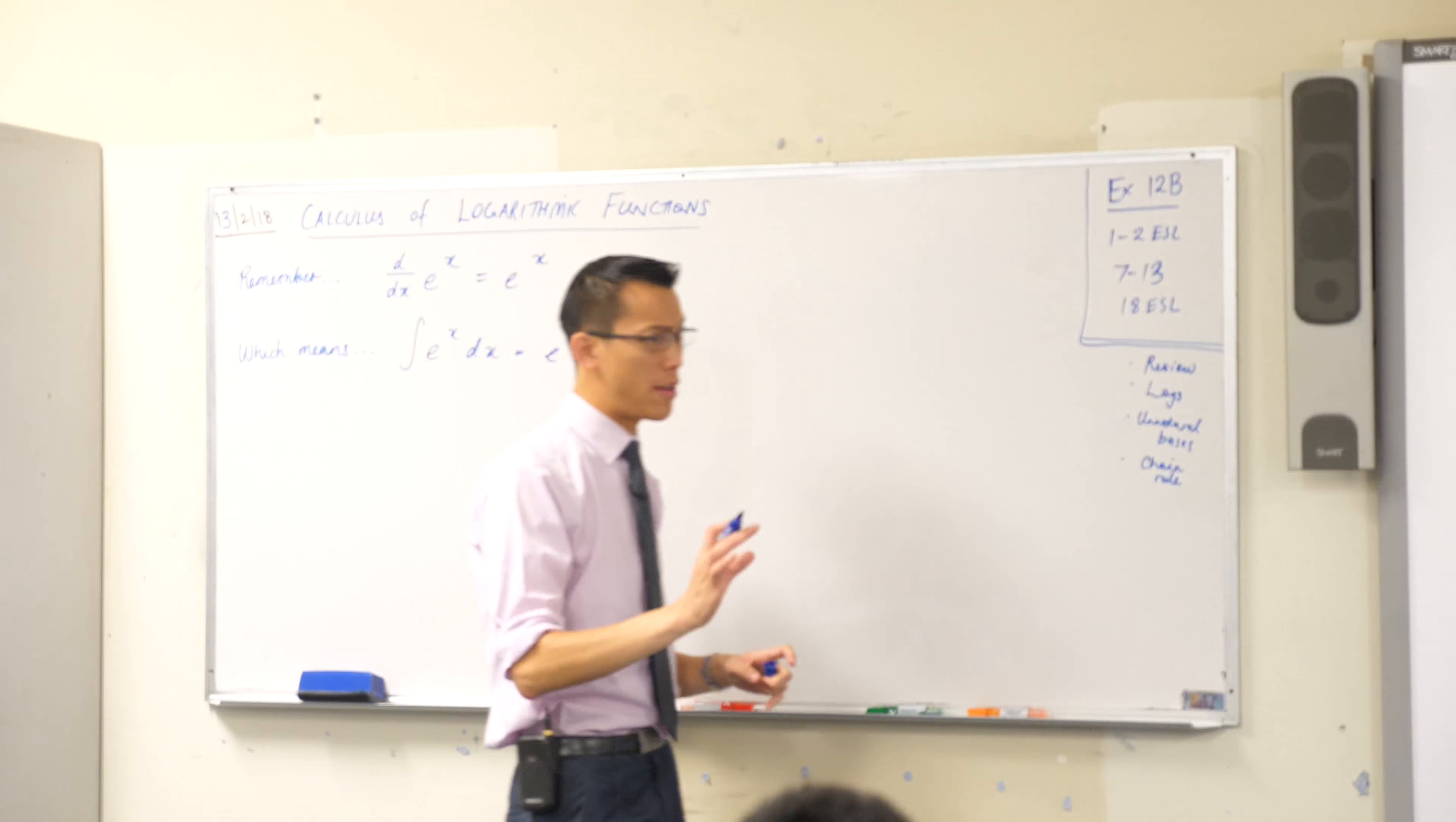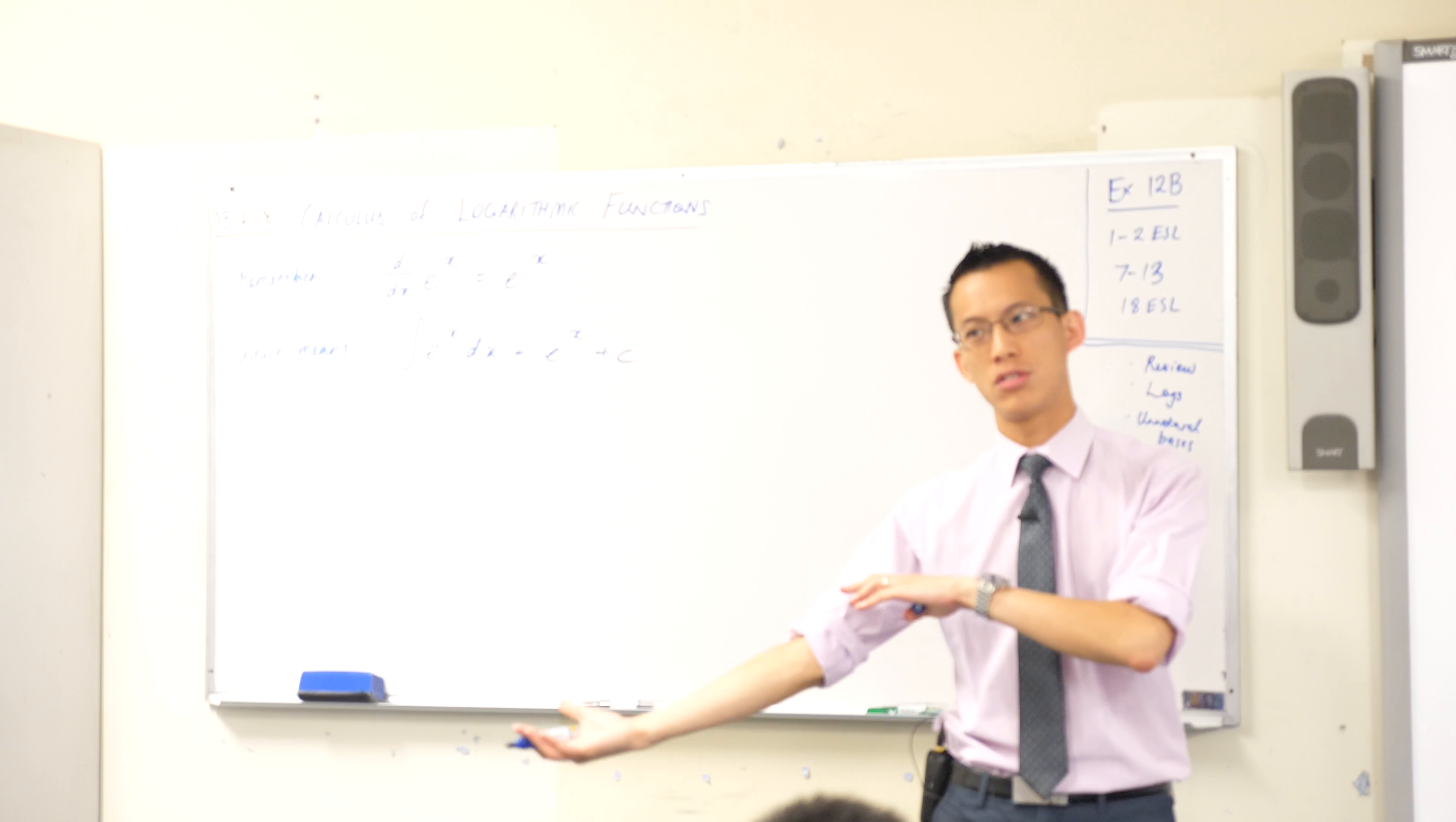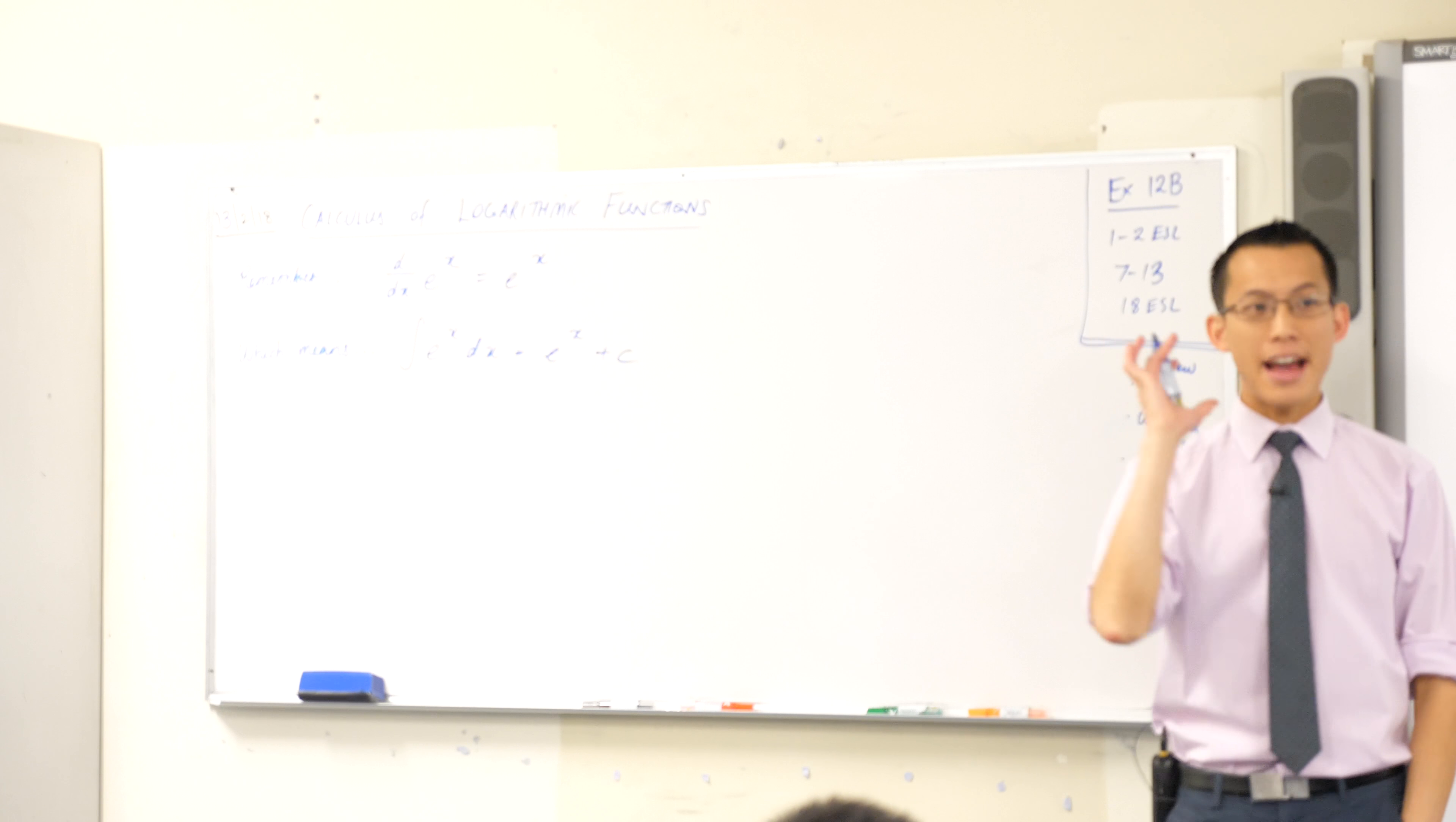We also looked very briefly at what happens when you don't have the natural base of e. If you had say 2 to the x, it's just off by a constant. In that case, it would be log 2. It just depends on the base.